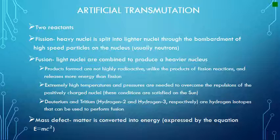Deuterium and tritium — hydrogen-2 and hydrogen-3 respectively — are hydrogen isotopes that can be used to perform fusion. Mass defect is when matter is converted into energy. This is expressed by the equation E equals mc squared, which I'm sure you're all familiar with.